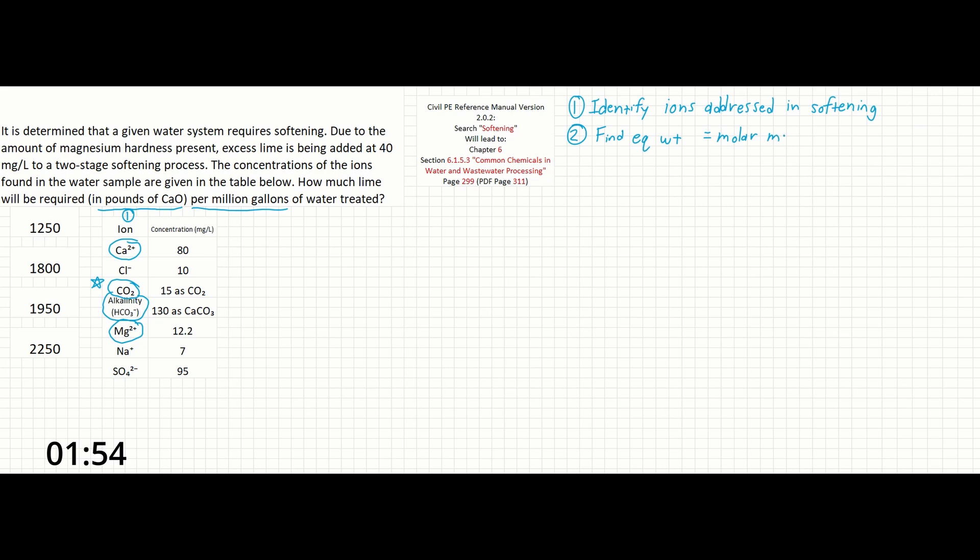Milliequivalent is calculated by dividing the concentration that we are given by the equivalent weight of the ion. We have the concentrations, so now we just need to find the equivalent weight. This is available in the manual in sections 6.1.5.3 and 6.1.5.5. Equivalent weight is the molar mass over the charge of the ion, and its units can be thought of as mg per milliequivalent.